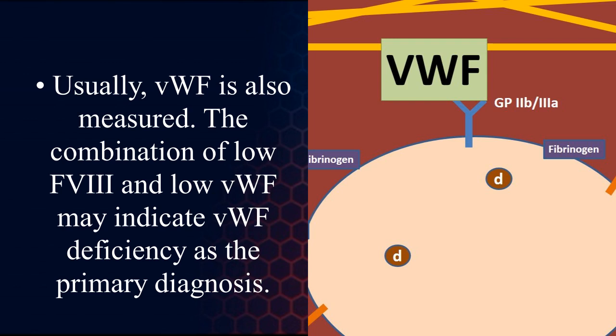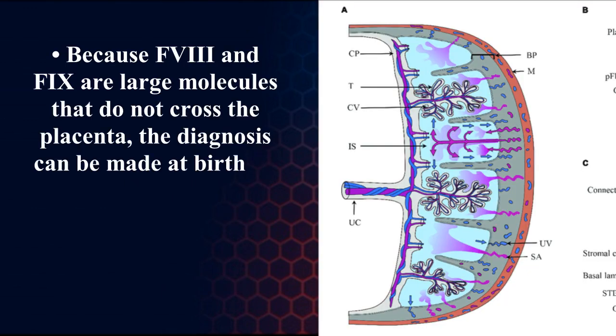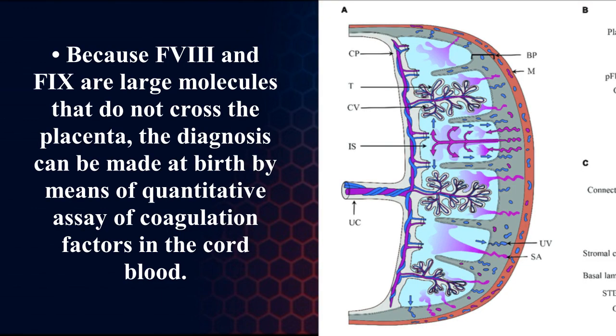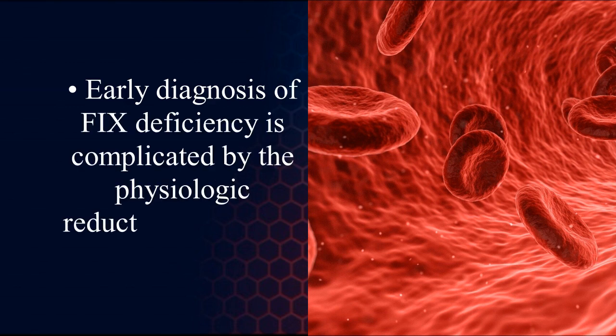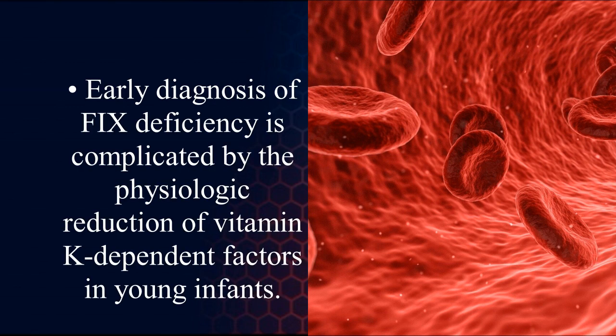Von Willebrand factor (vWF) is also usually measured; a combination of low factor 8 and low vWF may indicate von Willebrand factor deficiency as the primary diagnosis. Because factor 8 and factor 9 are large molecules that do not cross the placenta, diagnosis can be made at birth by quantitative assay of coagulation factors in cord blood.